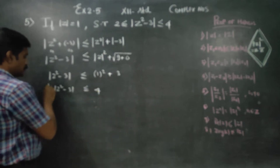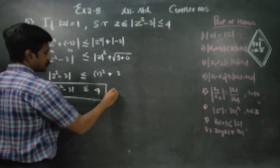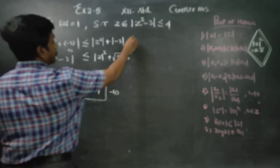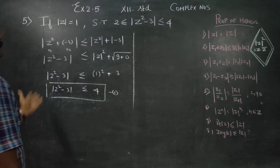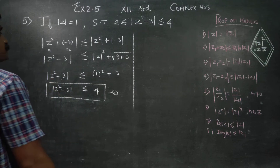|z² - 3| is less than or equal to 4. This is result number 1.